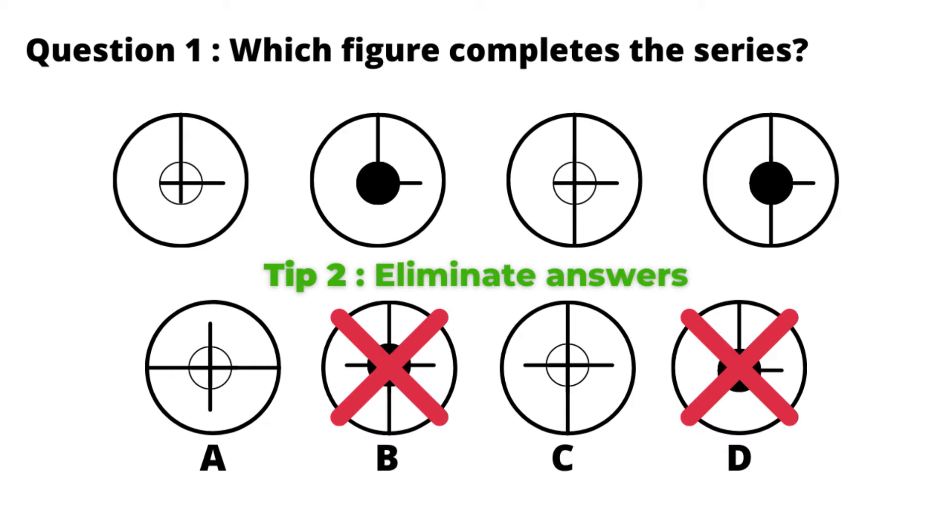Now there are two answers left, figure A and C. So let's find out another pattern. If you look into the first two figures, you can see vertical and horizontal lines. In the third and fourth figures, the vertical line has continued downwards.